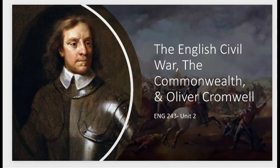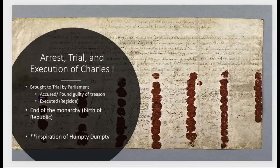There are kind of three stages of this civil war, and under the guidance of Puritan leader Oliver Cromwell, the Roundheads are victorious. When we last left off, King Charles had been arrested.